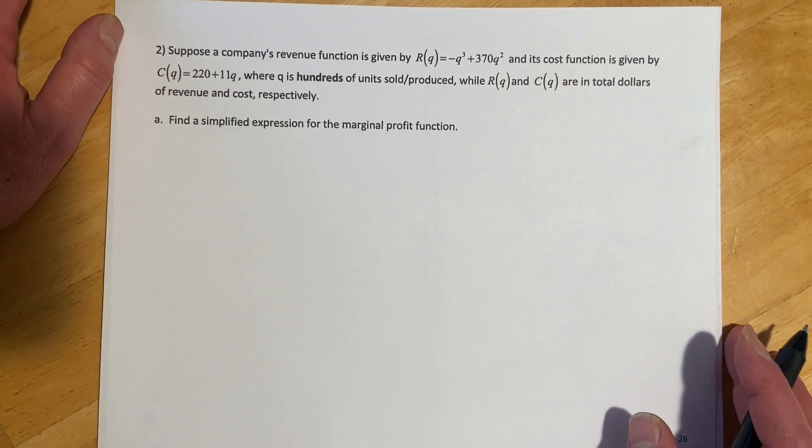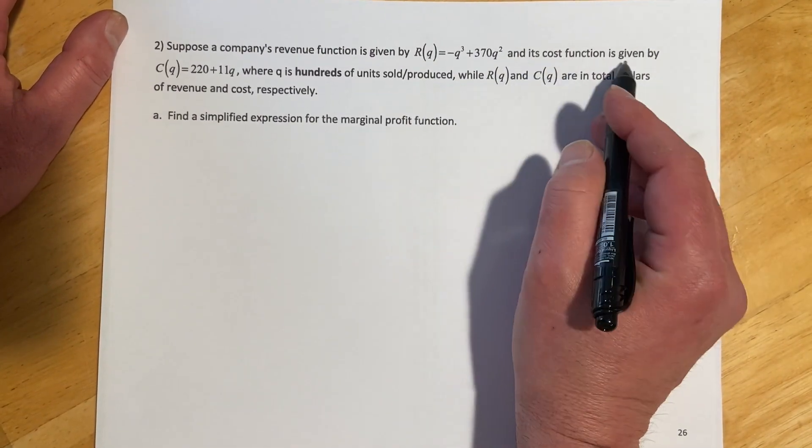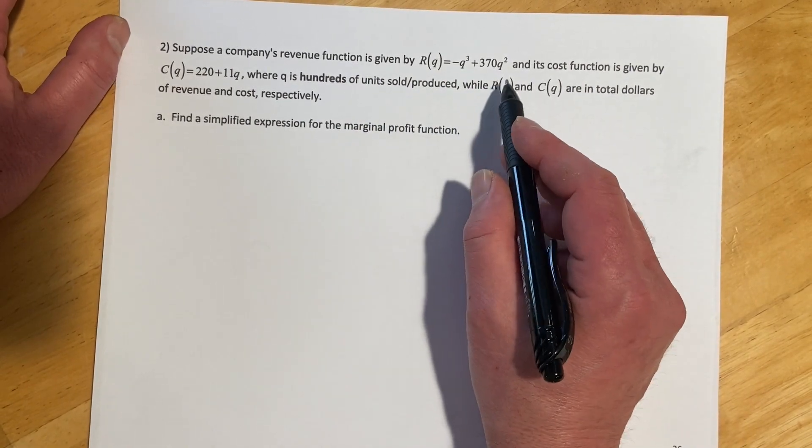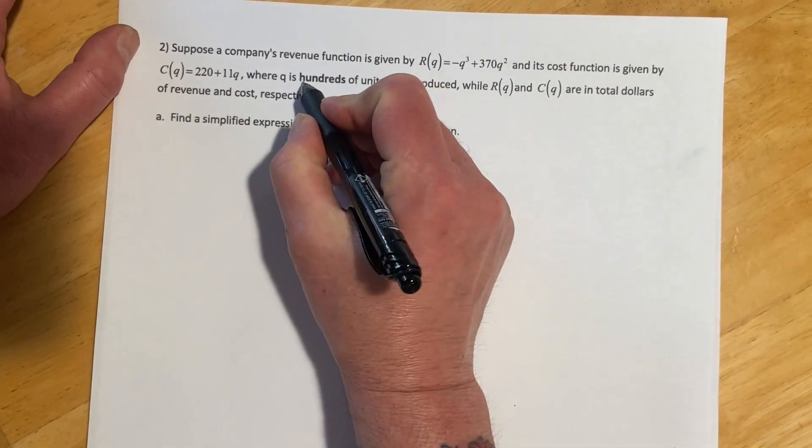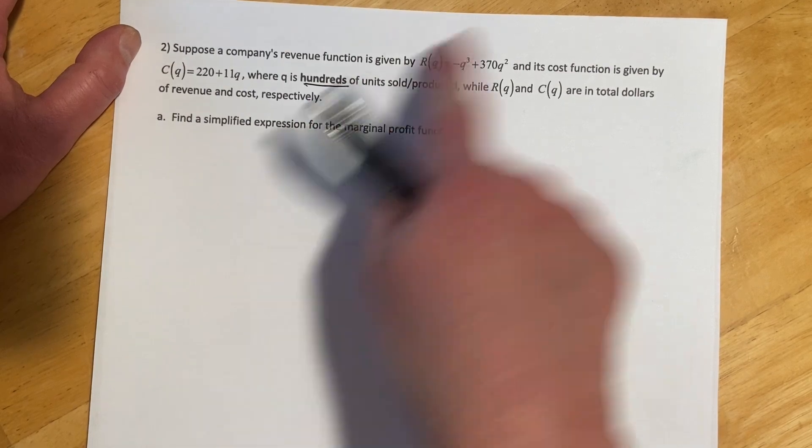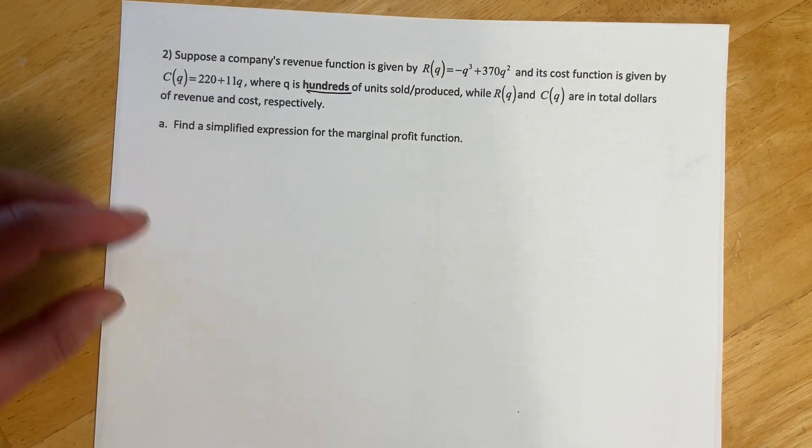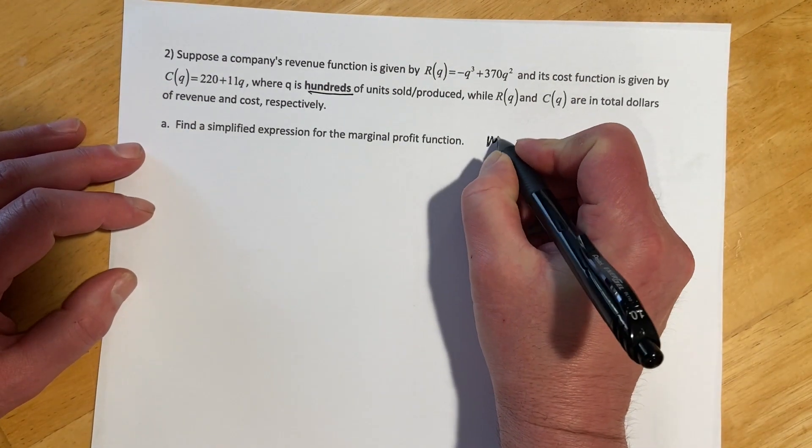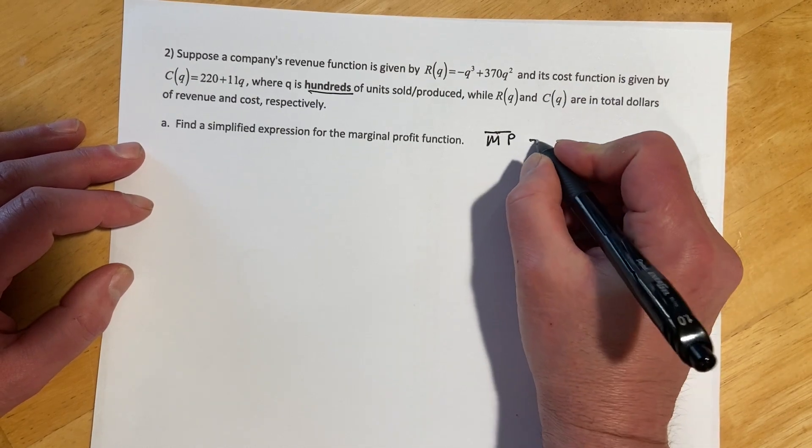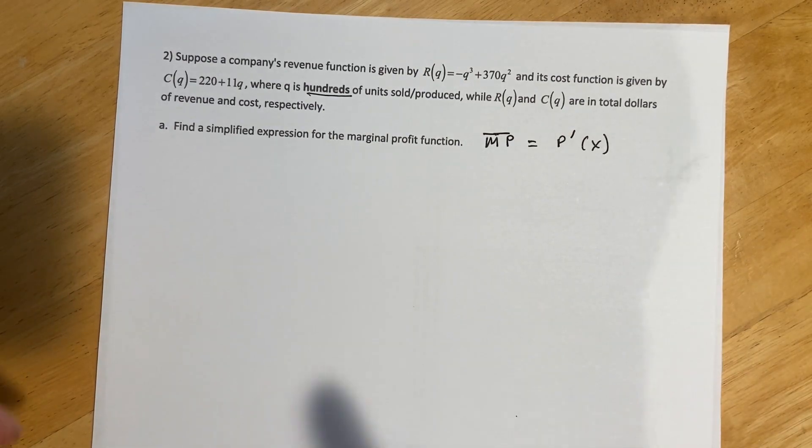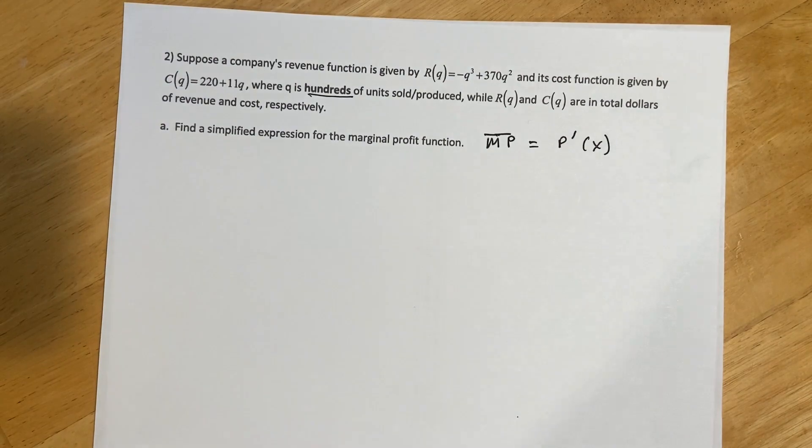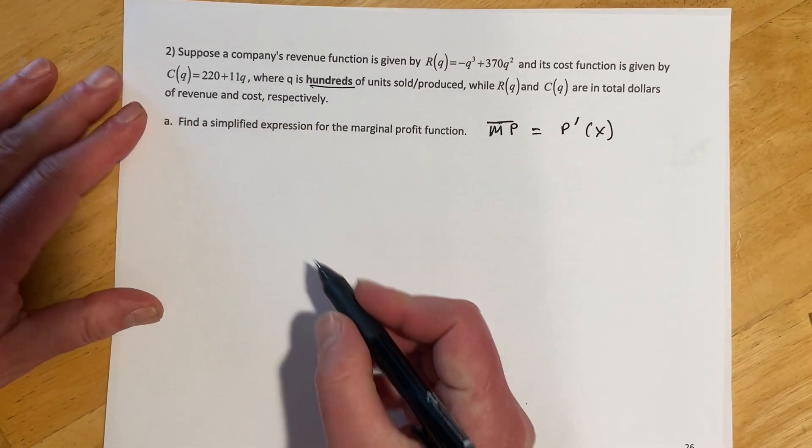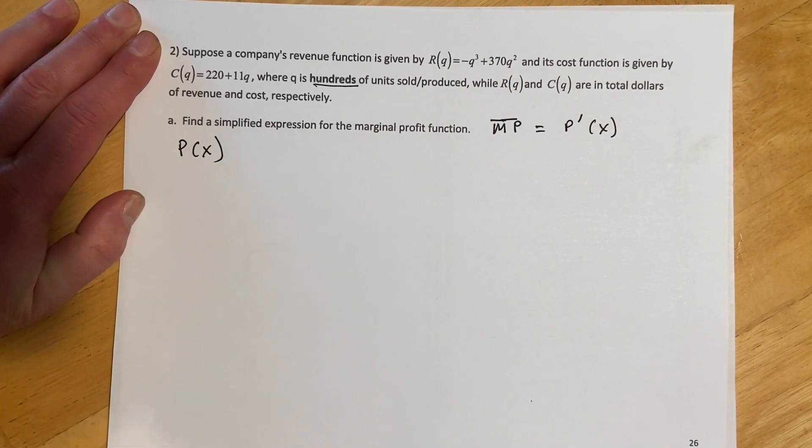Okay, so this one's supposed to company's revenue function is given by R of Q equals this stuff here and its cost function is given by C of Q equals that stuff there where Q is in hundreds and the units sold are produced while R of Q and C of Q are told all this revenue cost respectively. Okay, so Q is going to be hundreds. I think when they originally wrote this question that mattered more than it does now that they fixed it up. So I think we just have to, we don't have to do much with that for the way they reworded it. So we're supposed to, for part A, find a simplified expression for the marginal profit function. So if I want to find MP, marginal profit, that means that I need the derivative of the profit function, right? So that means I need a profit function, which I don't quite have, but I do have revenue and cost. And then if we go back here, remember profit equals revenue minus cost. So anytime I got revenue and cost, I can always get profit.